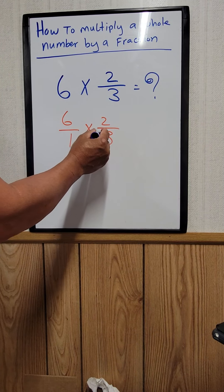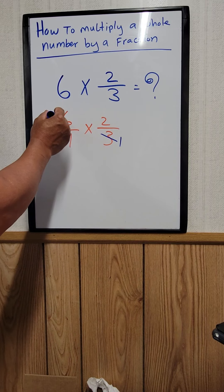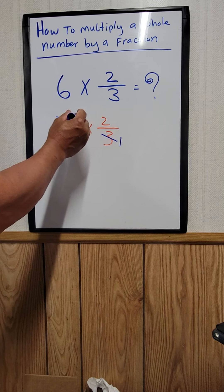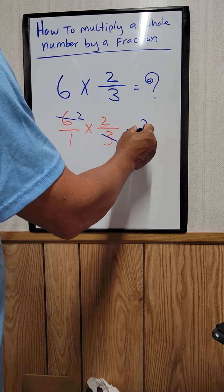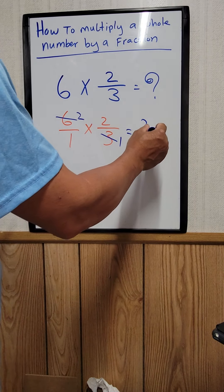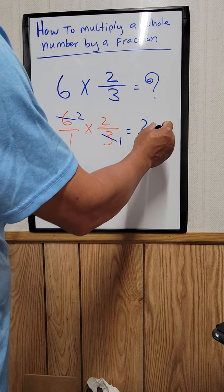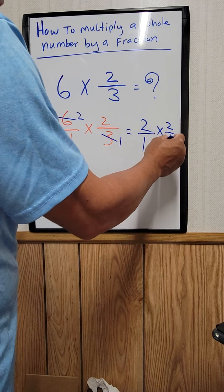So this equals 1, this equals 2. And then we'll have 2/1 times 2/1.